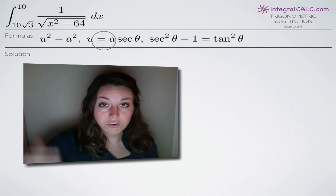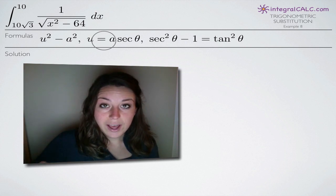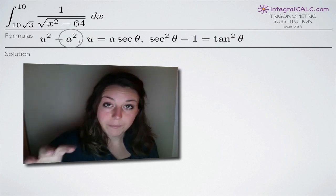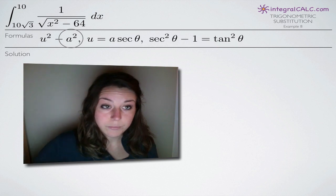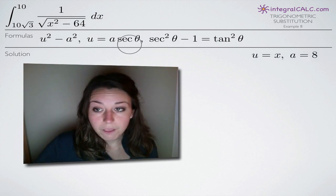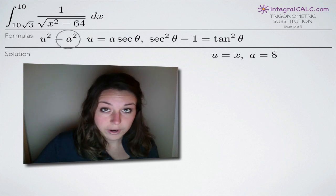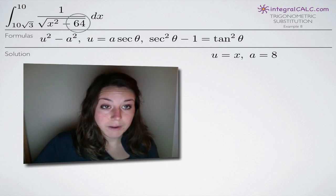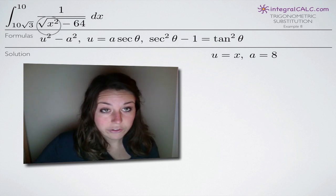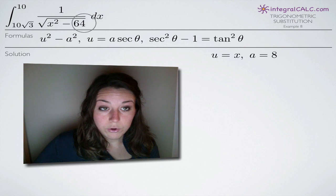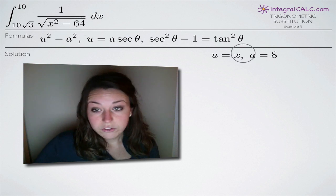Let's go ahead and do our trigonometric substitution setup. The first thing we need to do is identify the values of u and a. Because we have u squared minus a squared matching up with x squared minus 64, to find u we take the square root of x squared, which is x, so u equals x. And to find a, we take the square root of 64, which is 8, so a equals 8.